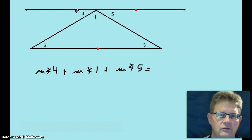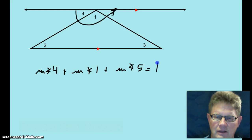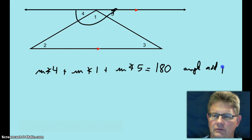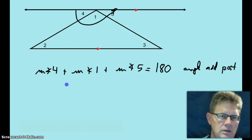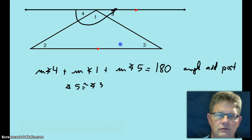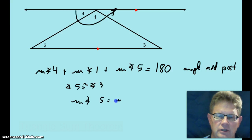Well, since this is a straight angle, that has to equal 180 degrees using the angle addition postulate. And since these lines are parallel up here, angle 5 is congruent to angle 3 — those are alternate interior angles 3 and 5. So that makes the measure of angle 5 equal to the measure of angle 3, by the definition of congruent angles.